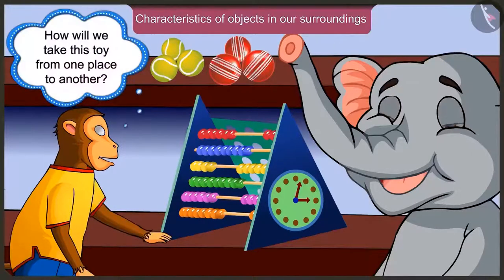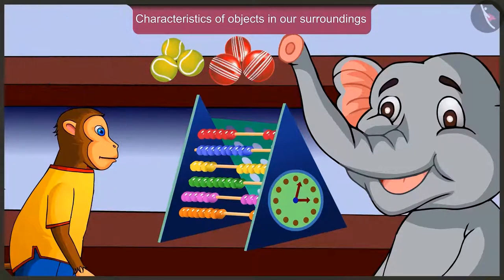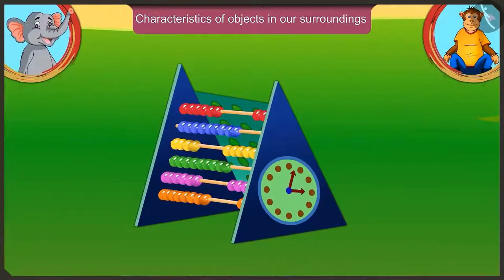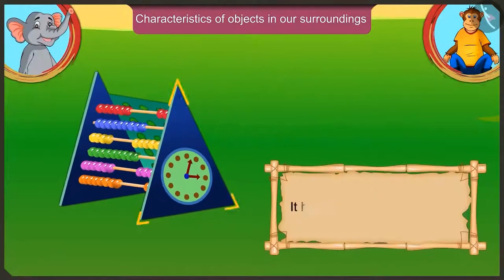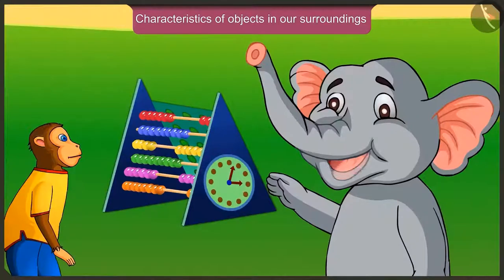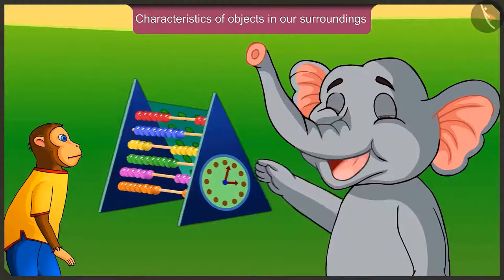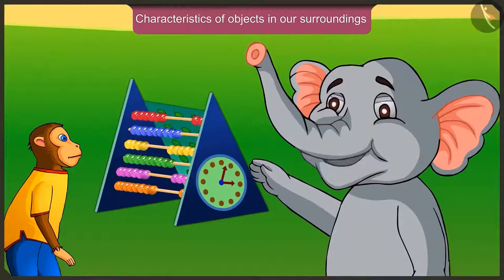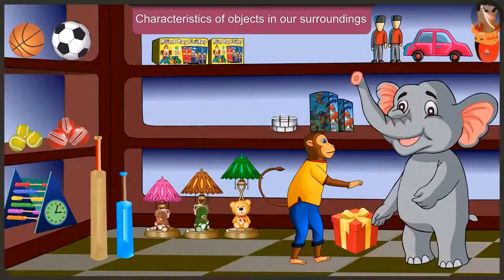Appu, how are we going to take this toy from one place to another? This is a very big toy. It is not round - it has corners and a flat surface. For that reason, we cannot roll it like a ball. We will slide it like this.